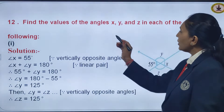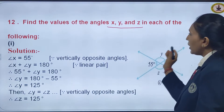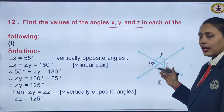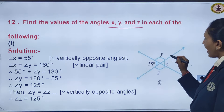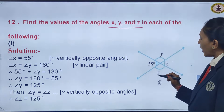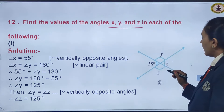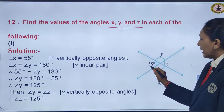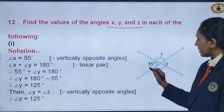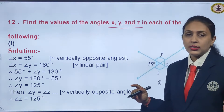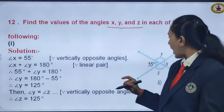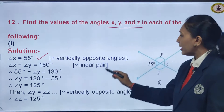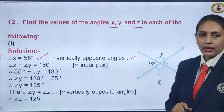Find the values of angle x, y, and z in each of the following. The figures are given and with their help we have to find x, y, and z. Let us start first with angle x. You can see that angle x and 55 degrees are vertically opposite angles. According to the rule, vertically opposite angles are equal, so angle x is 55 degrees.